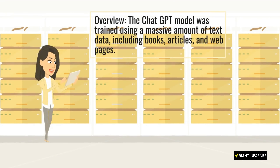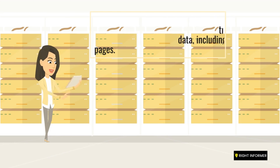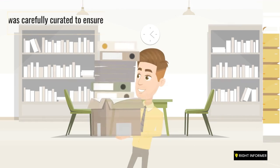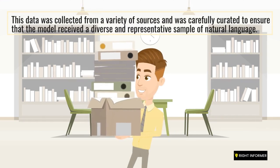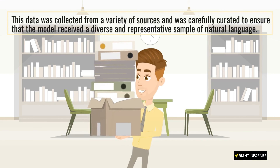The ChatGPT model was trained using a massive amount of text data, including books, articles, and web pages. This data was collected from a variety of sources and was carefully curated to ensure that the model received a diverse and representative sample of natural language.